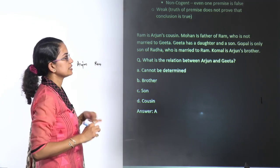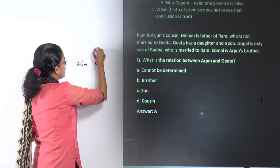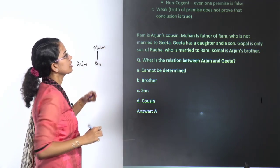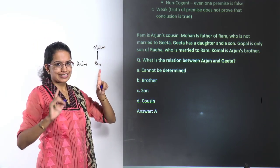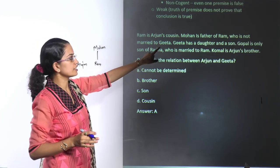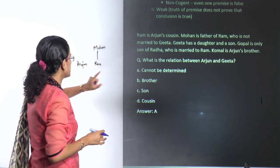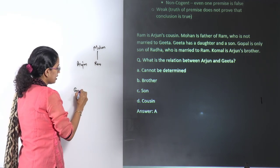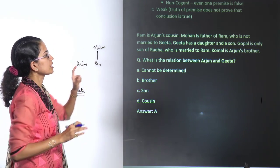Now, Mohan is the father of Ram, and Mohan is not married to Gita. This is not exactly clear, but probably Gita is for Ram — meaning Ram is not married to Gita. So Ram could be married to someone else, and Gita is someone else's wife.